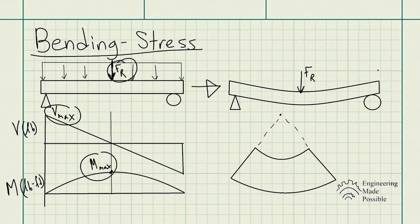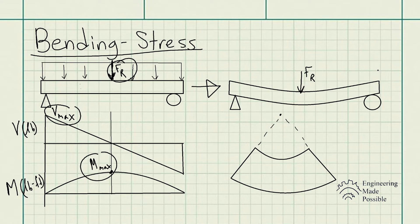I'm exaggerating the dimensions a bit so it's more intuitive. The top portion — the second the beam bends — actually has to be a smaller length than the bottom portion. When the beam is stationary with no external loads it's a rectangular shape: top and bottom lengths are equivalent. However, the second it deforms, the bottom length actually extends while the top length actually shortens.